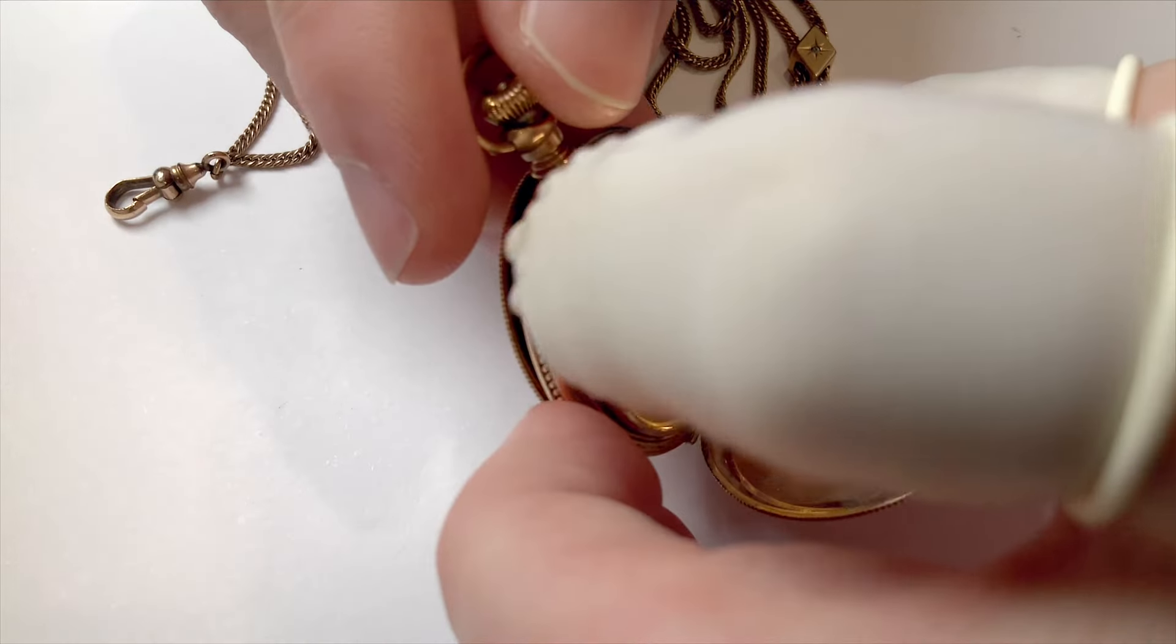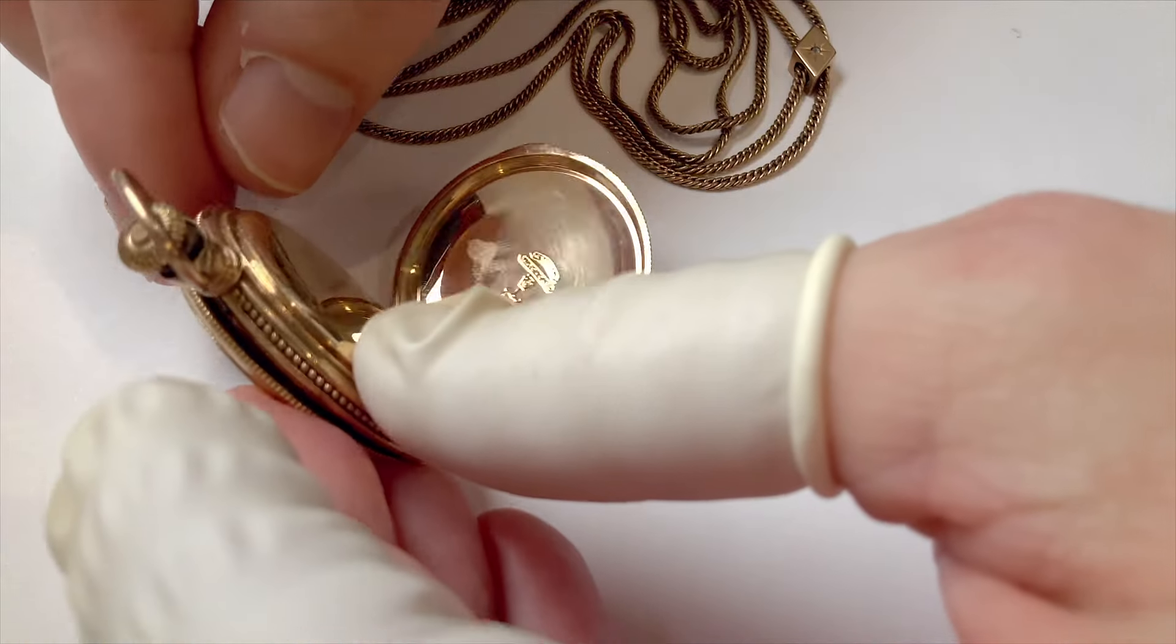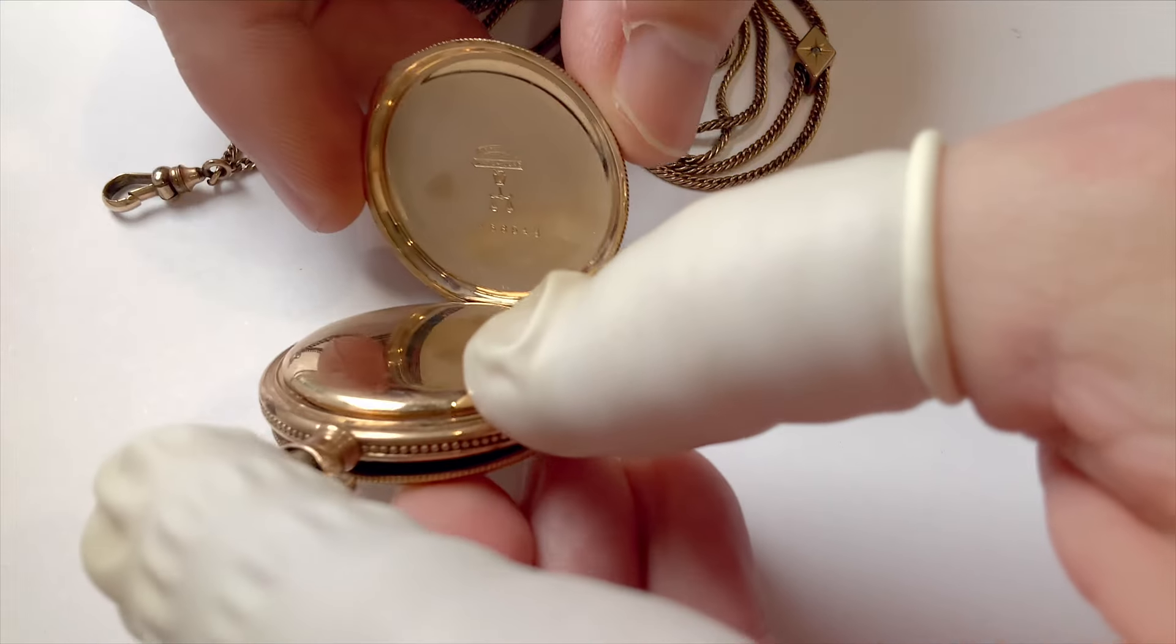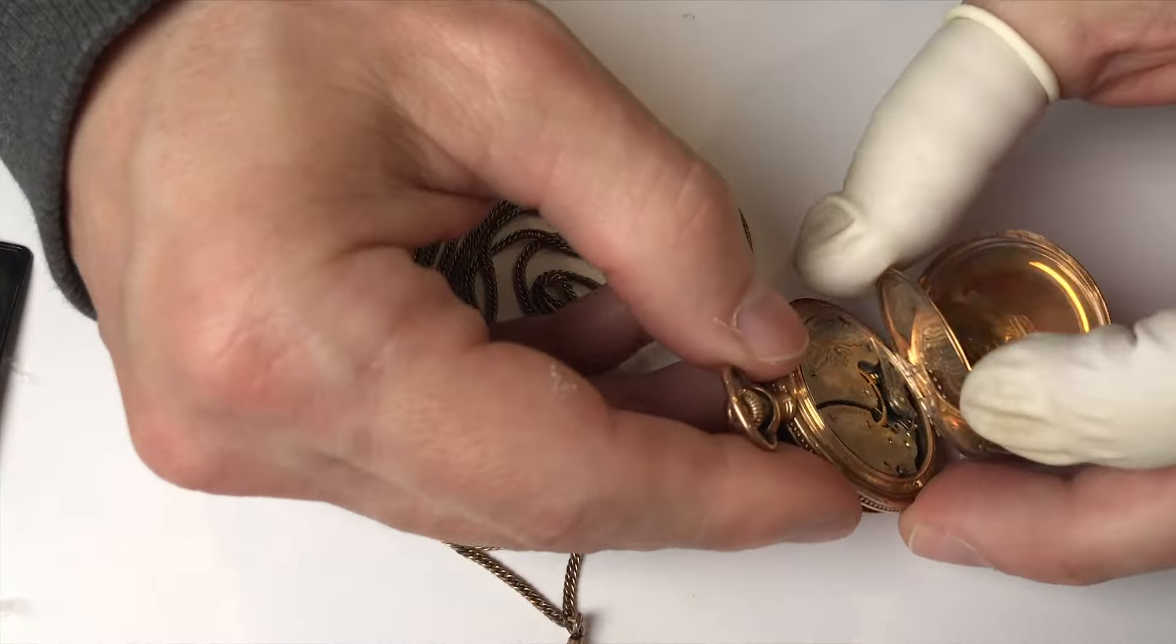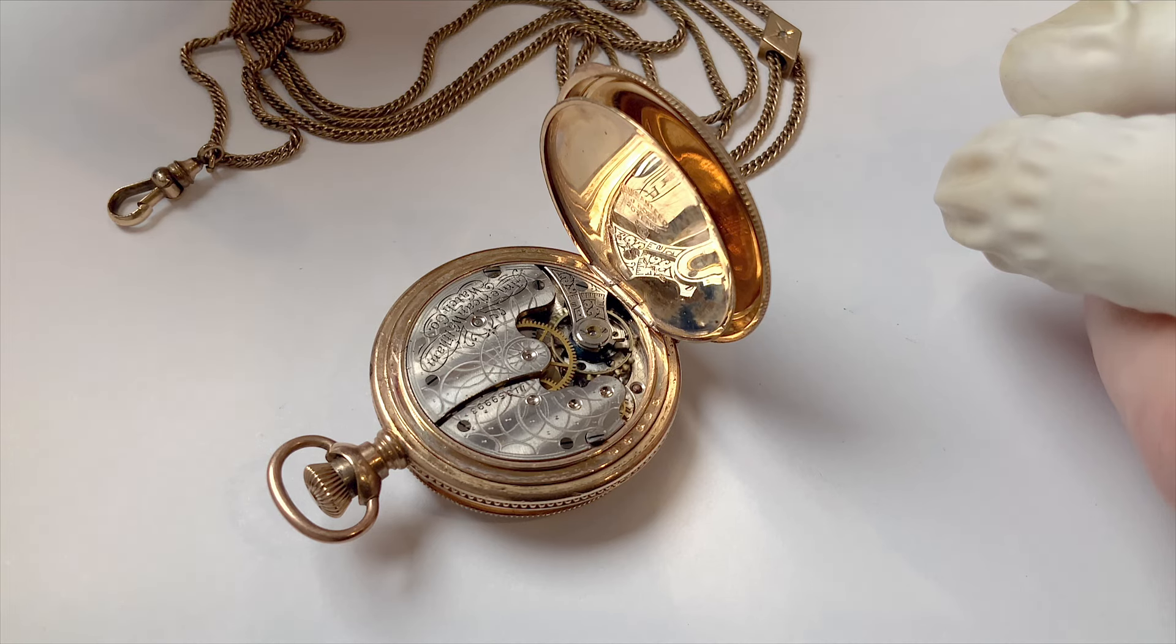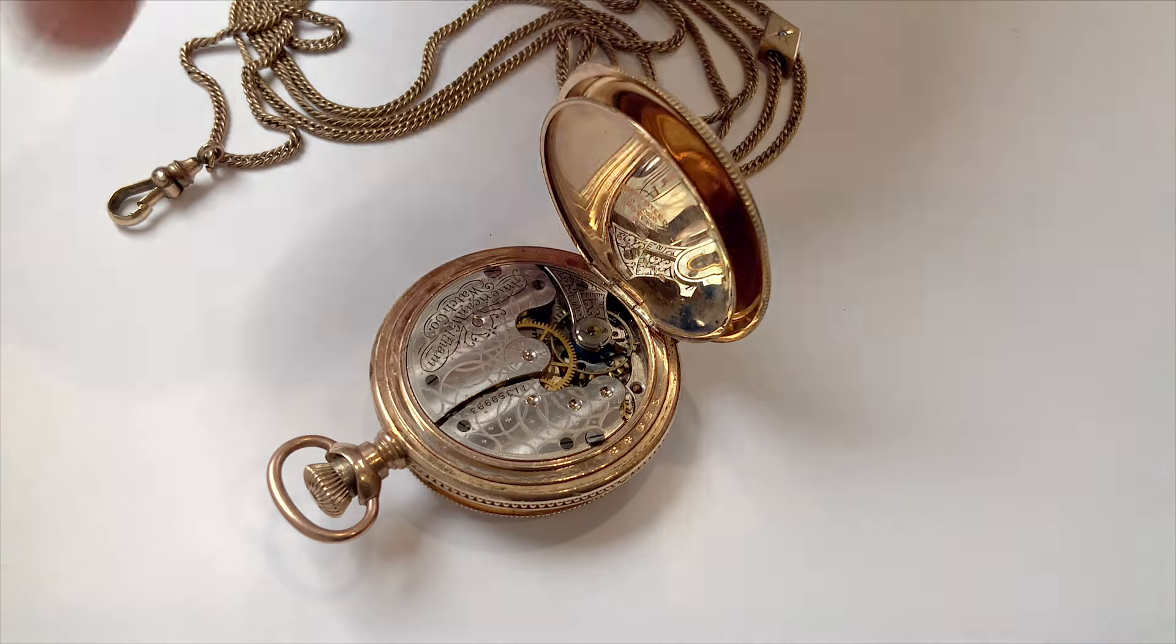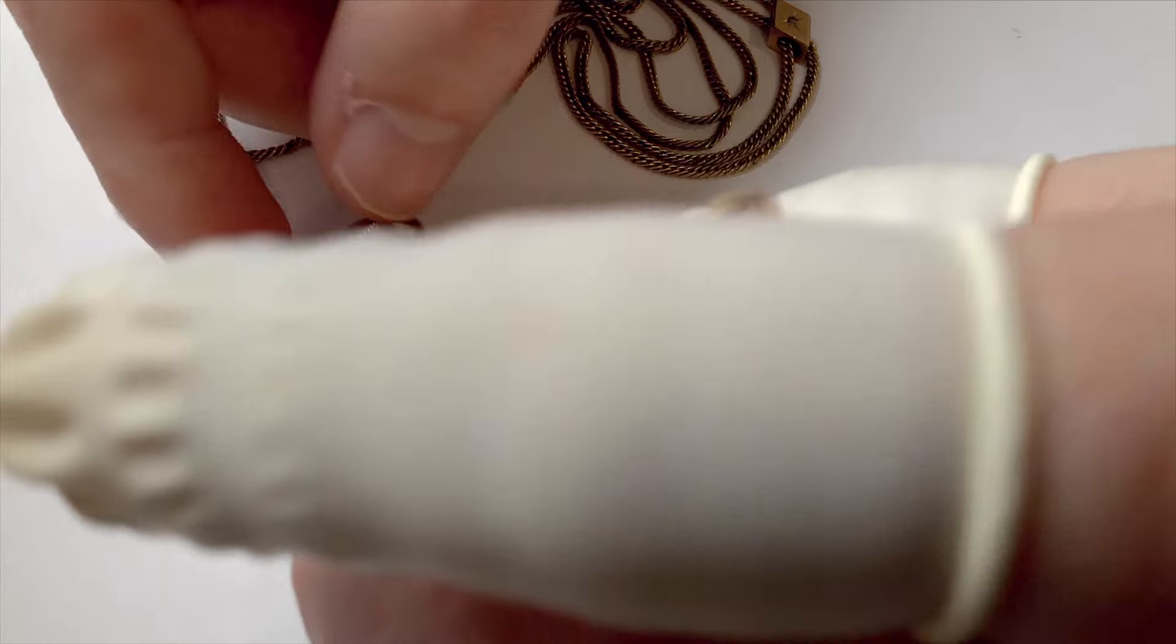Looks like the minute hand has been bent. It's touching the dial, likely because of that missing crystal. Let's take a look at the movement here. Actually, here on the inside of the case there's a stamp that indicates it's gold filled. We won't be polishing this case, we'll just buff off the fingerprints. Let's see if our balance will oscillate. Okay, well it's not wobbling but it definitely looked a little sticky.